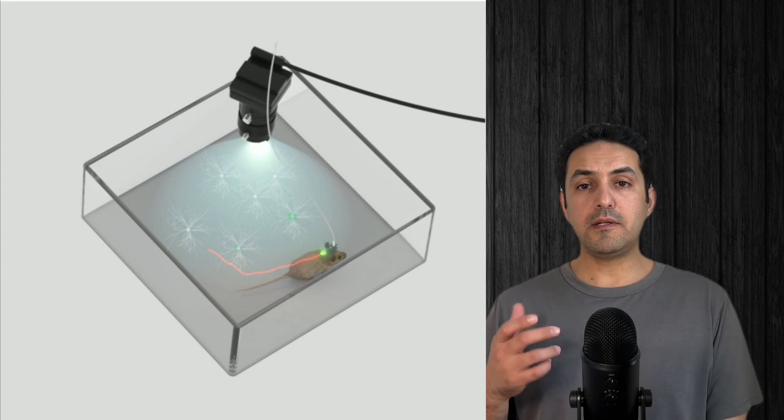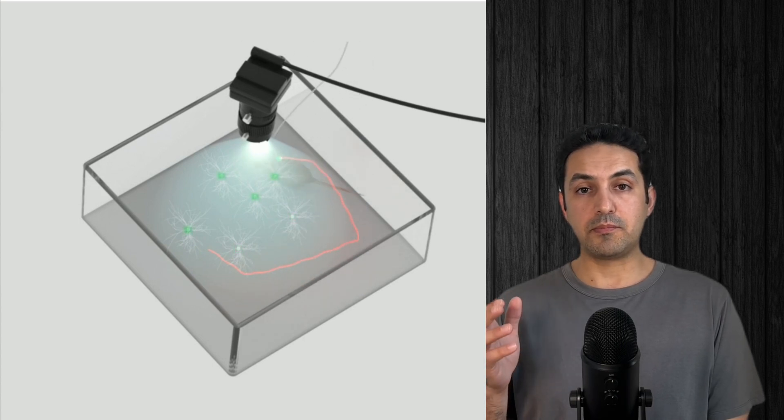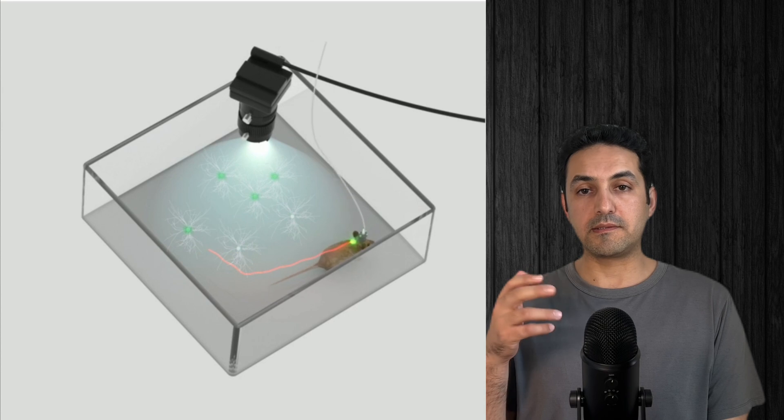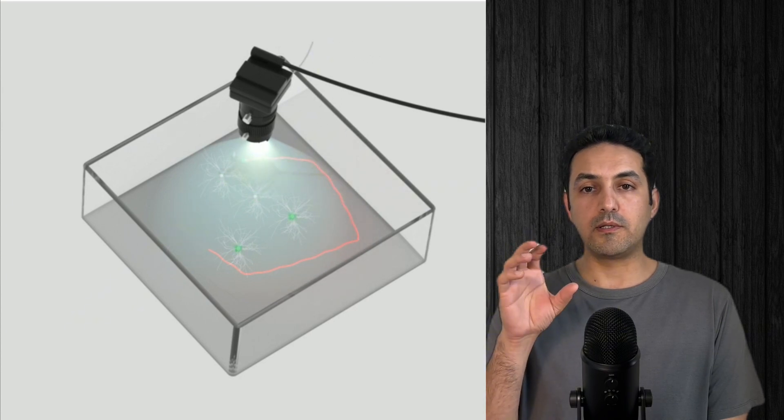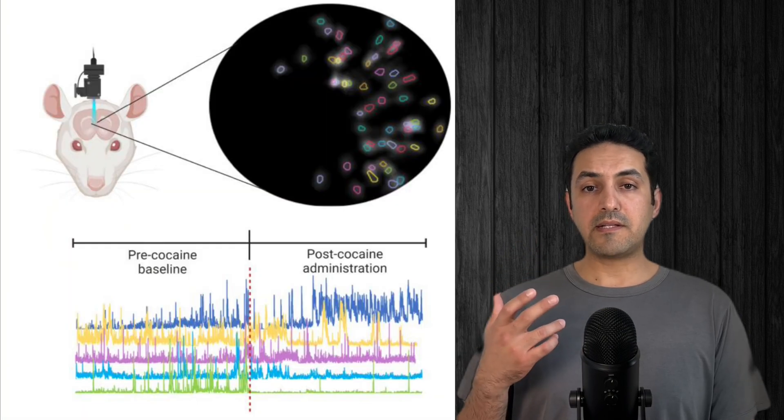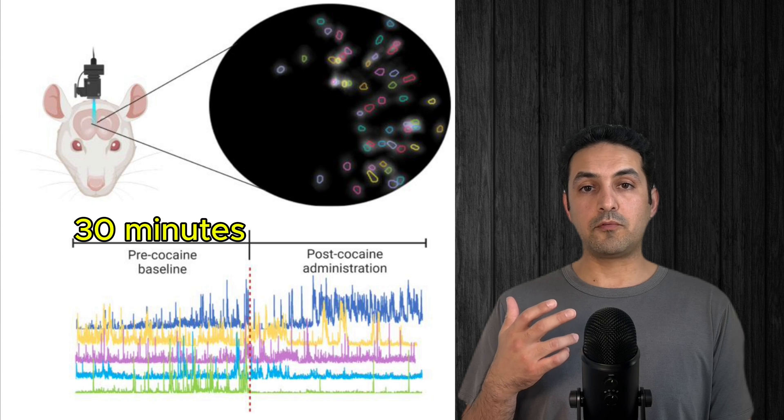After that, a tiny lens was implemented in the rat's brain. This lens is like a microscope that lets researchers see the glowing neurons inside the brain. Then the rat's brain activity was recorded for 30 minutes.